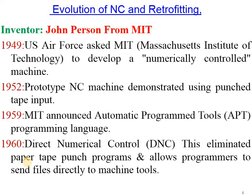We will see the evolution of NC and retrofitting — how they invented and developed the NC machine system. The first inventor was John Parsons from MIT, Massachusetts Institute of Technology. In 1949, the US Air Force asked MIT to develop a numerical control machine. In 1952, the first prototype of the NC machine was demonstrated using punch tape input.